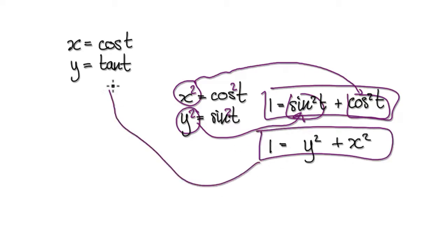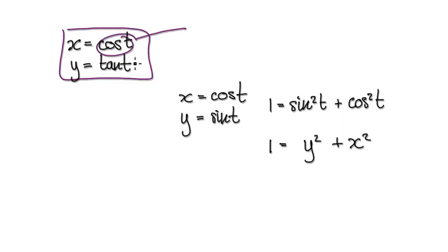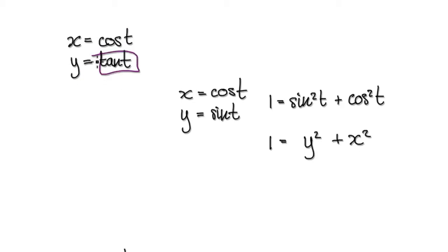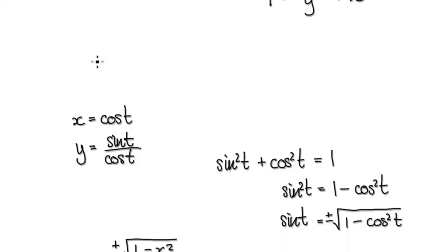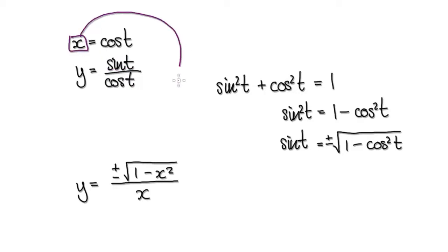So when you look at the tan case, look for something that connects both x and tan t. Let's rewrite tan t as sine t over cos t. Because later on you can substitute x in for cos t.